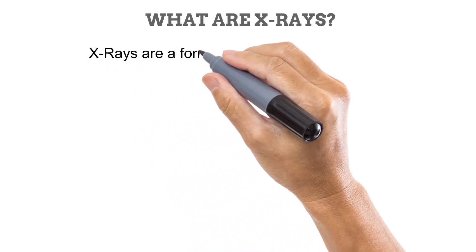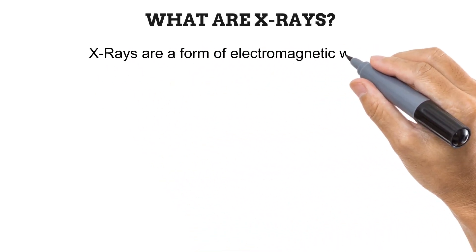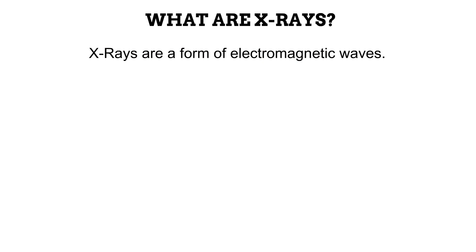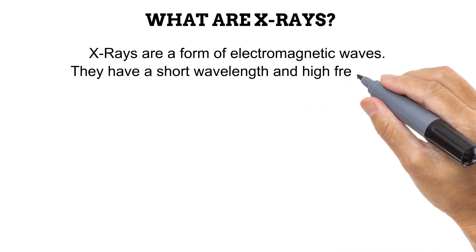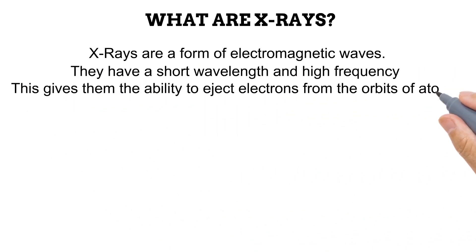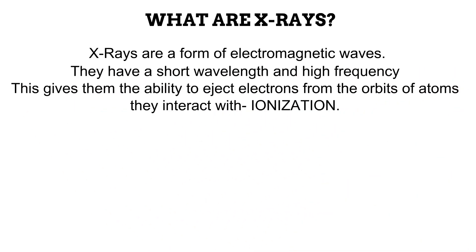X-rays are a type of electromagnetic waves. Other types of electromagnetic waves include the waves coming from broadcasting stations to our televisions and radios, the infrared waves that our remote controls use, light waves and so on. What makes X-rays different from these other forms of electromagnetic waves is that they have a shorter wavelength and a higher frequency.